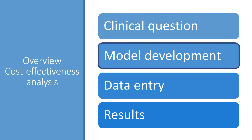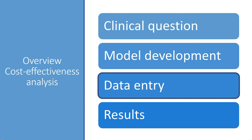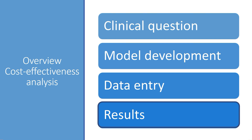Then you have to develop a model — a computer simulation. You could also alternatively do a cost effectiveness analysis parallel to a randomized controlled trial, but in the field of radiology it's probably not so feasible. Once the model is finished, you enter all the data: cost, effectiveness, and disease-specific parameters. Then the computer calculates the average cost and the average effectiveness for each strategy so you can compare the results.